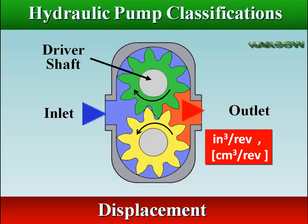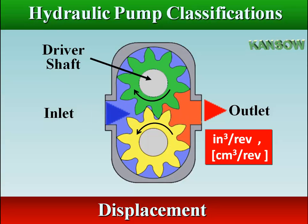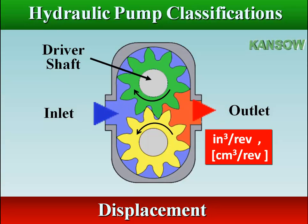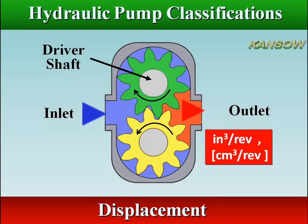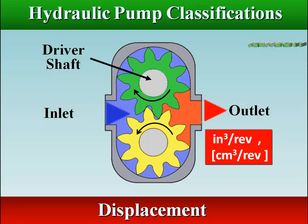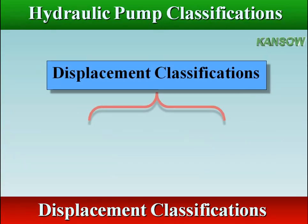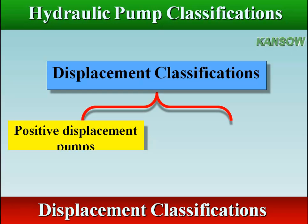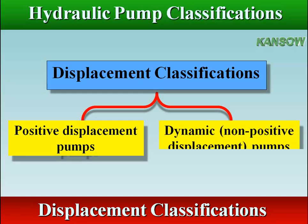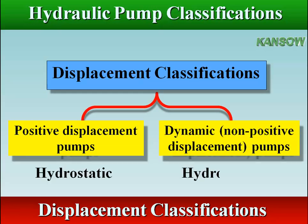Pump displacement can be defined as the quantity or volume of fluid displaced through a pump during a single cycle or stroke of the pump shaft. Pumps are basically classified as either positive displacement or non-positive displacement.